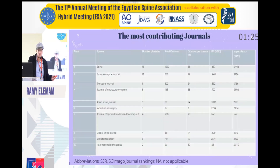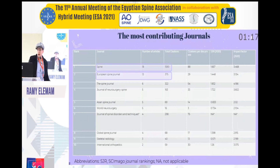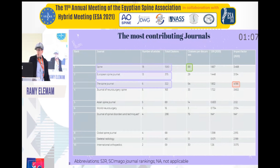This is a summary of the most contributing journals, with Spine coming in first place with 18 publications, the European Spine Journal in second with 13, and The Spine Journal with 6. Spine had the highest citation-per-document count, while The Spine Journal had the highest impact factor at 4.166.